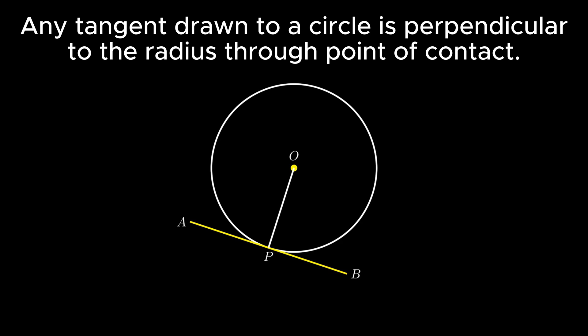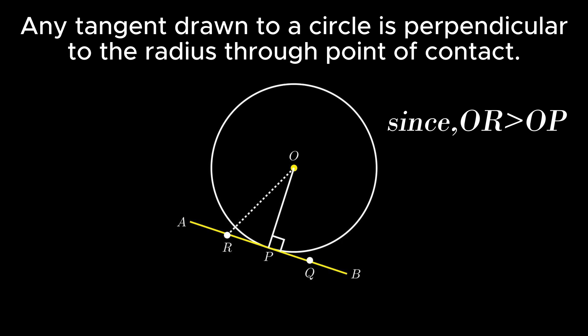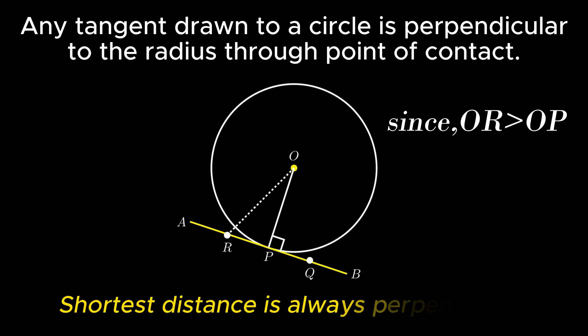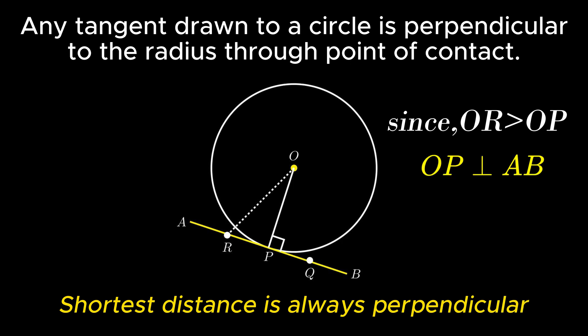As per the theorem, we need to prove that angle OPB equals 90 degrees. To prove this, consider a point R on the tangent and join point O to point R. Since the length of segment OR is greater than segment OP, using the fact that the shortest distance is always perpendicular, we conclude that OP is perpendicular to the tangent AB.